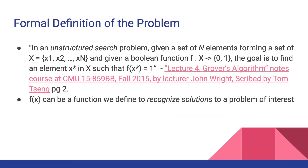Here's the formal definition of the problem. In an unstructured search problem, given a set of n elements forming a set X — from x₁ to xₙ — and there's a Boolean function f(x) that takes any x and gives you a 0 or a 1. The goal is to find an element x* — that's the solution — such that f(x) gives us 1 if it's the solution and 0 otherwise. That's all f(x) does.